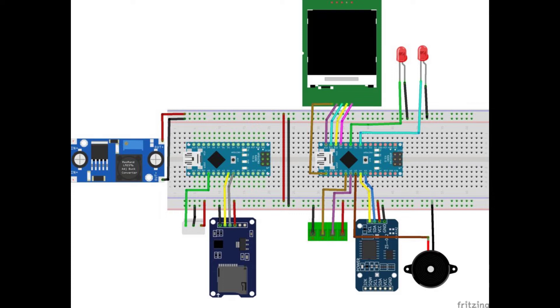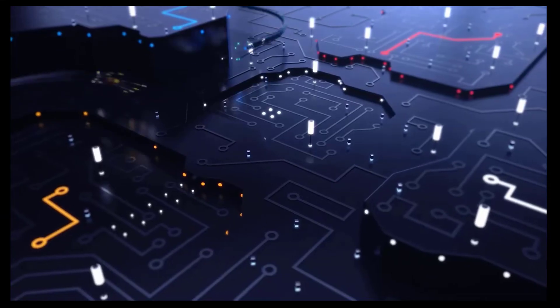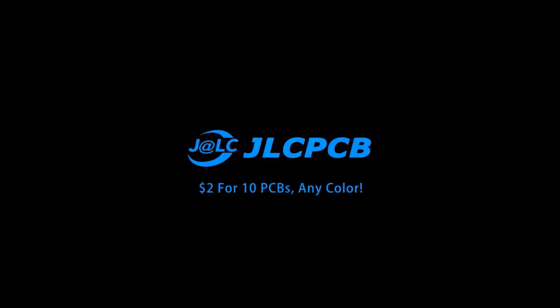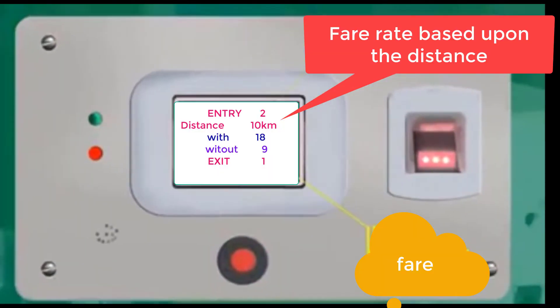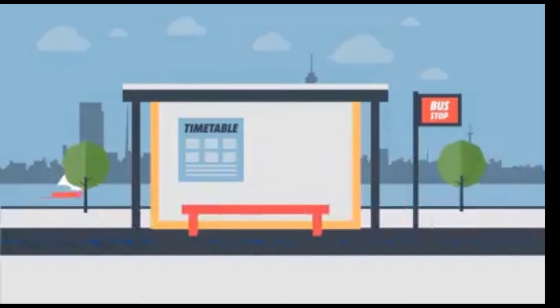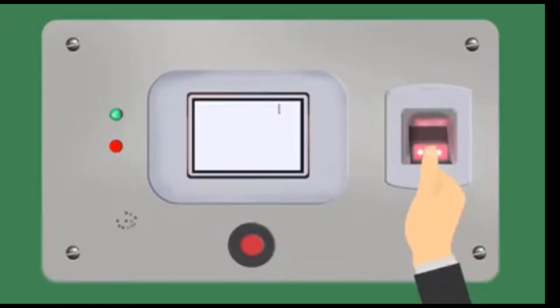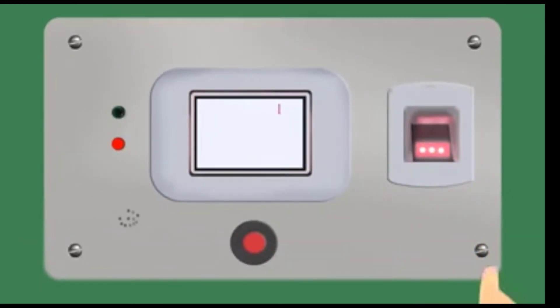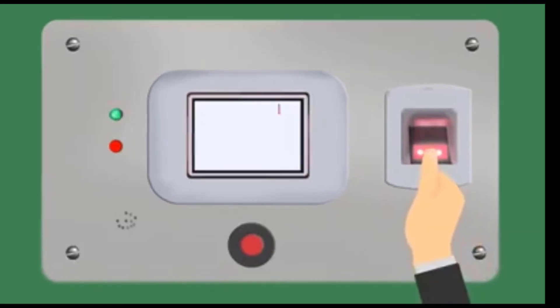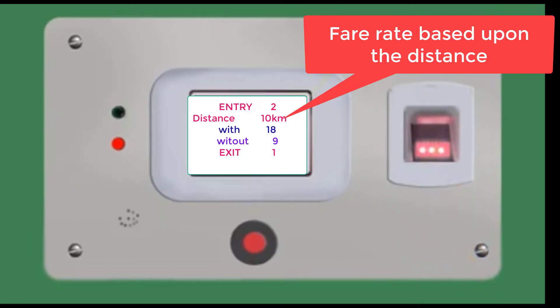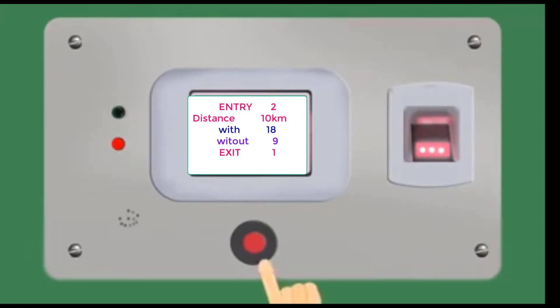This is the final overview of our circuit diagram. This is the outlook of the fare monitoring system, where it displays the total distance covered and total money to be paid on screen. To use this device, a passenger should place their finger on the fingerprint sensor during entry. After reaching the destination, repress the sensor and it displays the total distance travelled along with the amount to be paid. You can press the discount button if you are a student or old-aged person.